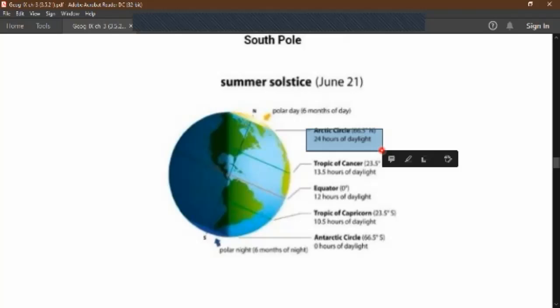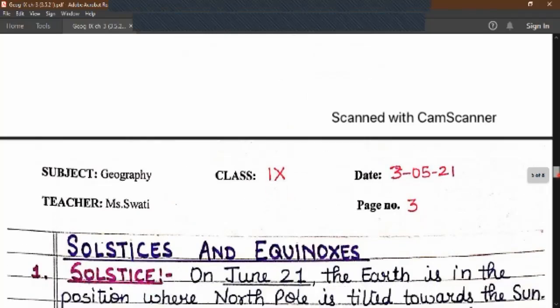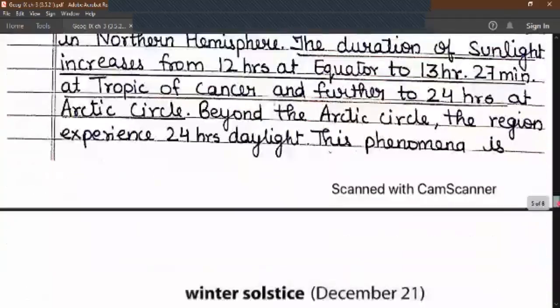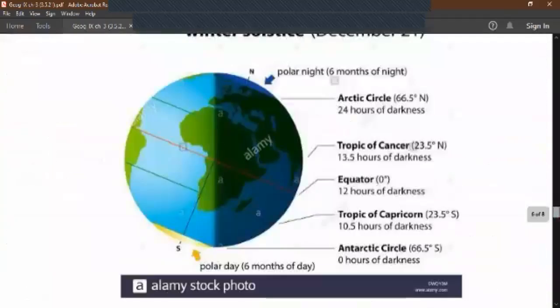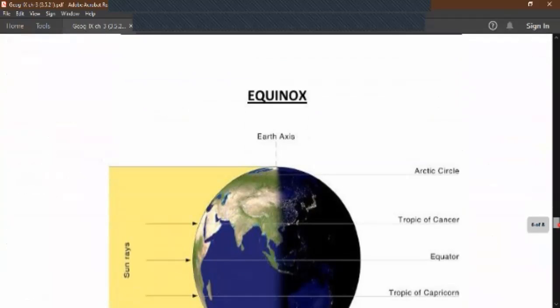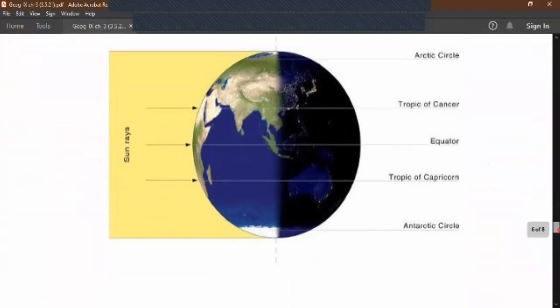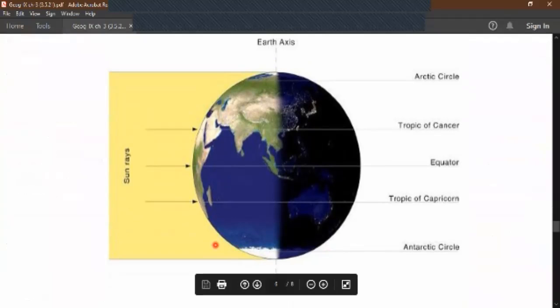After 21st June, the hours of sunlight starts decreasing. Second is the position on 23rd of September. The sun is vertically overhead at equator and the day and night are equal. It is autumn in the northern hemisphere and spring in the southern hemisphere.